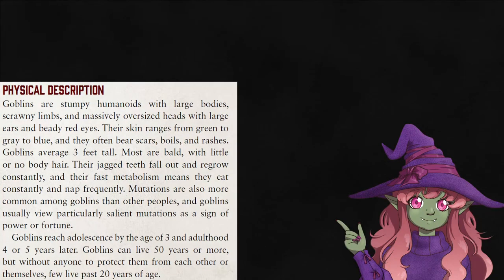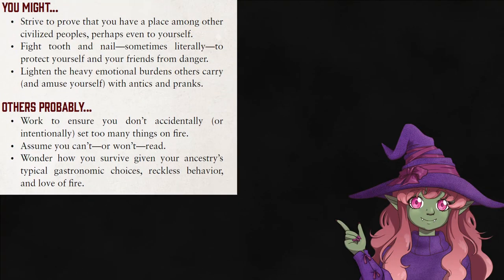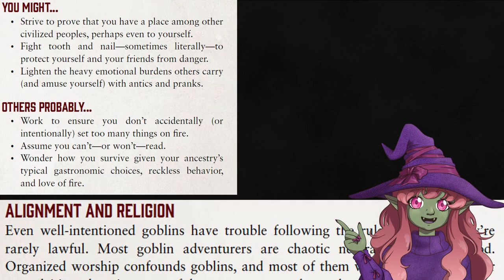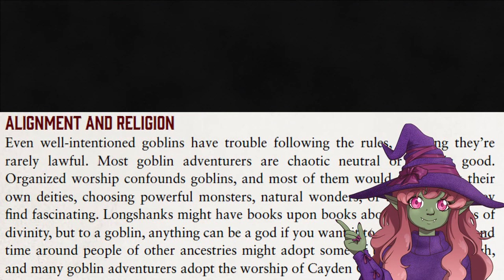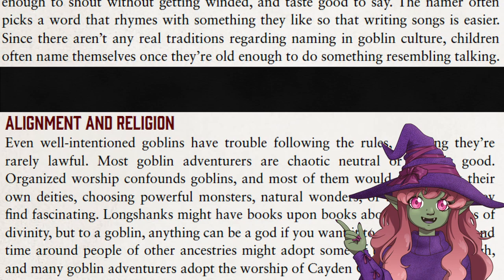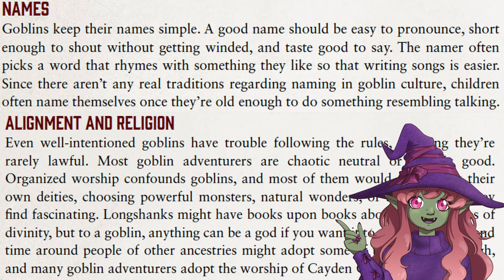That summary gives a description, stereotypes people have about them, their usual society, the type of god and alignment they lean toward, and even your common naming conventions. These are standard traits to help you decide your character's personality and set your expectations, but most of them can be defied however you like.